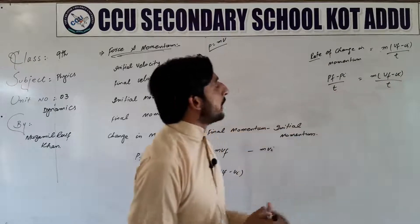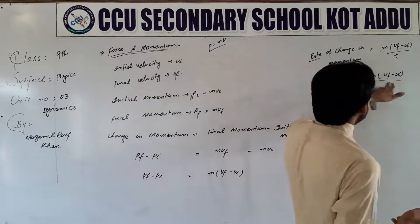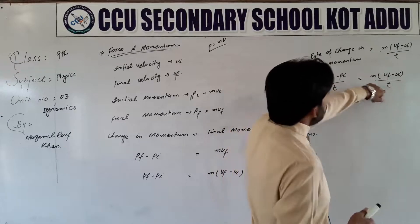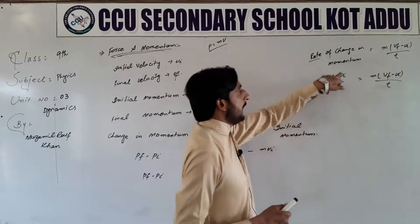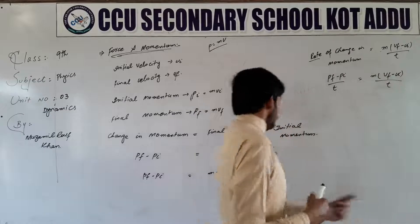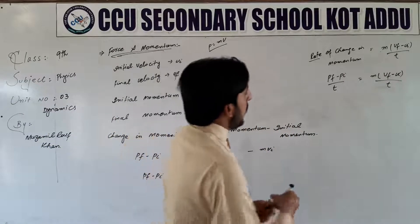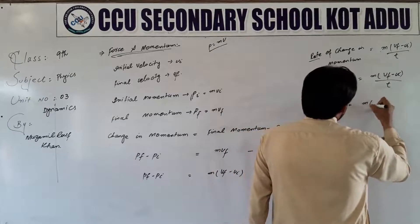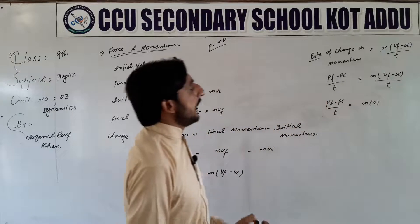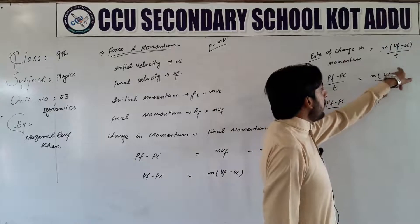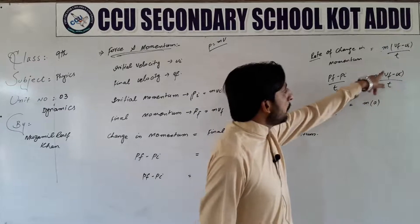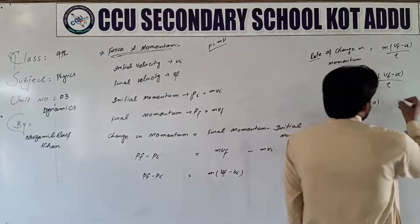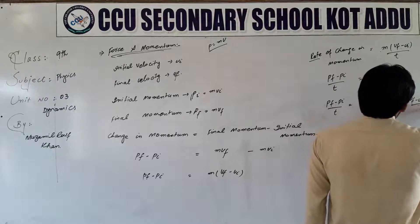Ab dono side se t jo divide ho raha hai — yahan se isko dusri side par le jata hun, multiply hoga, t se t cancel. Value: pf minus pi is equal to m into (vf minus vi). Agar is t ko side par le jaen, toh yahan divide hai, idhar aa ke multiply ho jae ga, t se t cancel. Ab yahan par jab me isko simplify kerta hun: pf minus pi over t is equal to m into a. Question arise hota hai: yeh a kahan se aaya — jabke hamare paas m into (vf minus vi) over t tha. Yahan par maine (vf minus vi) over t ki jagah a liya. A lene ki wajah yeh hai — ham unit number 2 mein discuss kar chuke hain: rate of change of velocity of a body is called acceleration.